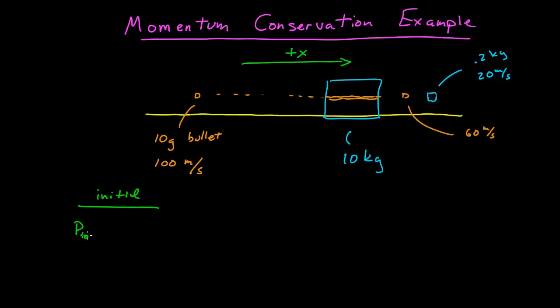So we have some total momentum, and it's x-axis so I'm just dealing with x components, is the mass of the bullet which is 0.01 kilograms times the velocity which is 100 meters per second, and so we have a positive 1 kilogram meter per second momentum.